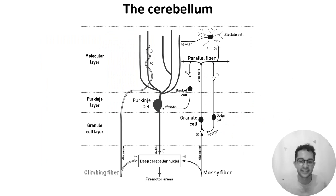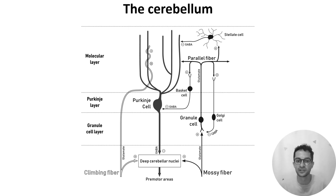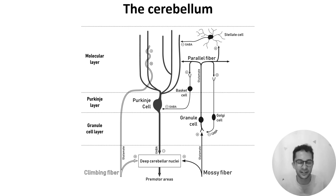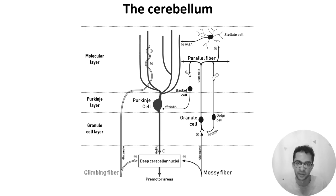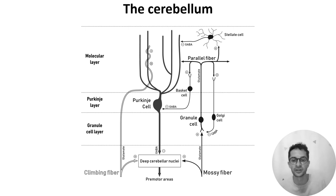Our first circuit: the cerebellum is an area of the brain involved in coordinating movement, and it's composed of circuits which look something like this diagram. There are three things to note: the cells are found in three layers labeled on the left, the major cell types are labeled — like the granule and Purkinje cells — and the connections between cell types are marked as either excitatory or inhibitory depending on what neurotransmitters they use.